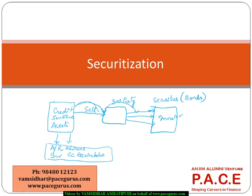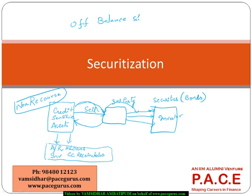Initially, the party which has bought these credit sensitive assets is pumping in cash. And the moment it has pumped in cash, the assets can be removed from the balance sheet. They can be removed only if they are non-recourse — meaning once sold out, it is a true sale. Only then are they removed from the balance sheet, making it an off-balance sheet kind of transaction. So whenever we are doing a proper securitization, it becomes an off-balance sheet transaction.